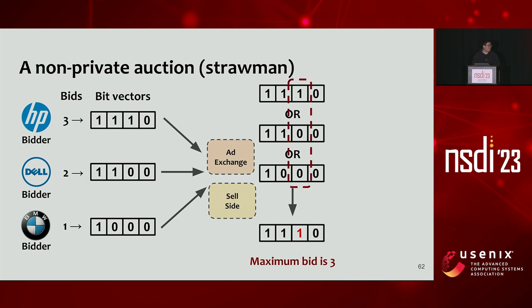The next step is to find out who actually won at this price. The auction servers check the third entries in each bidder's bid vector one by one, finding that the first bidder set this entry to 1, so the first bidder is the winner.